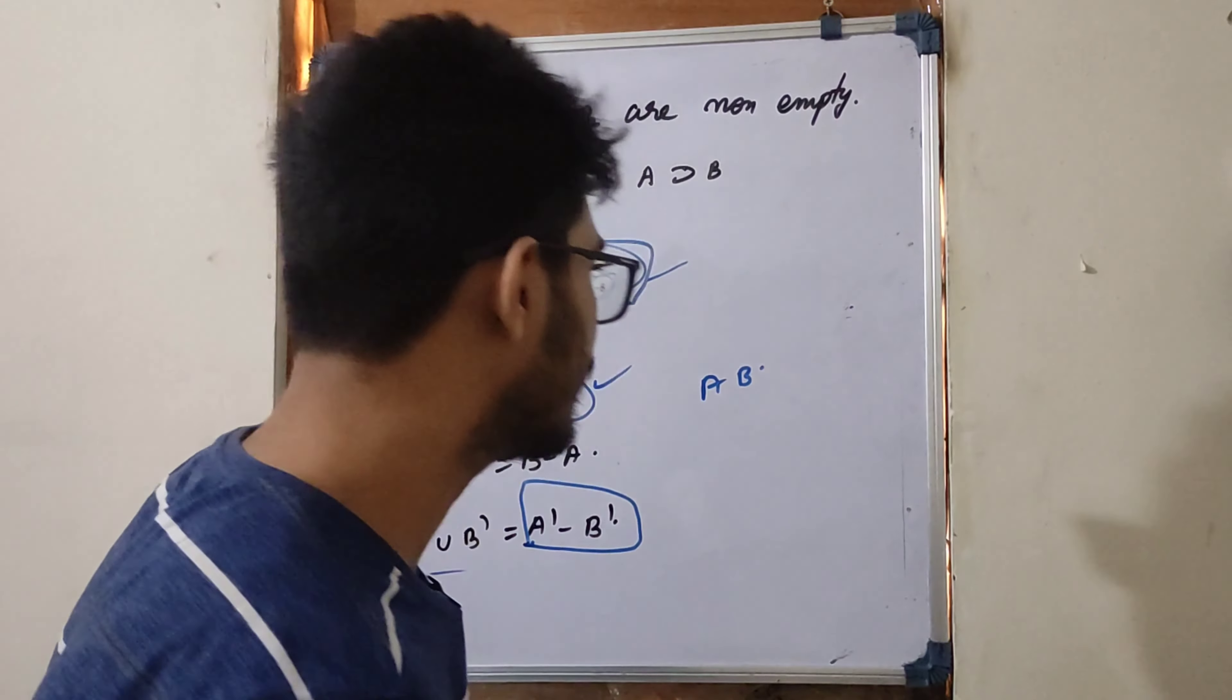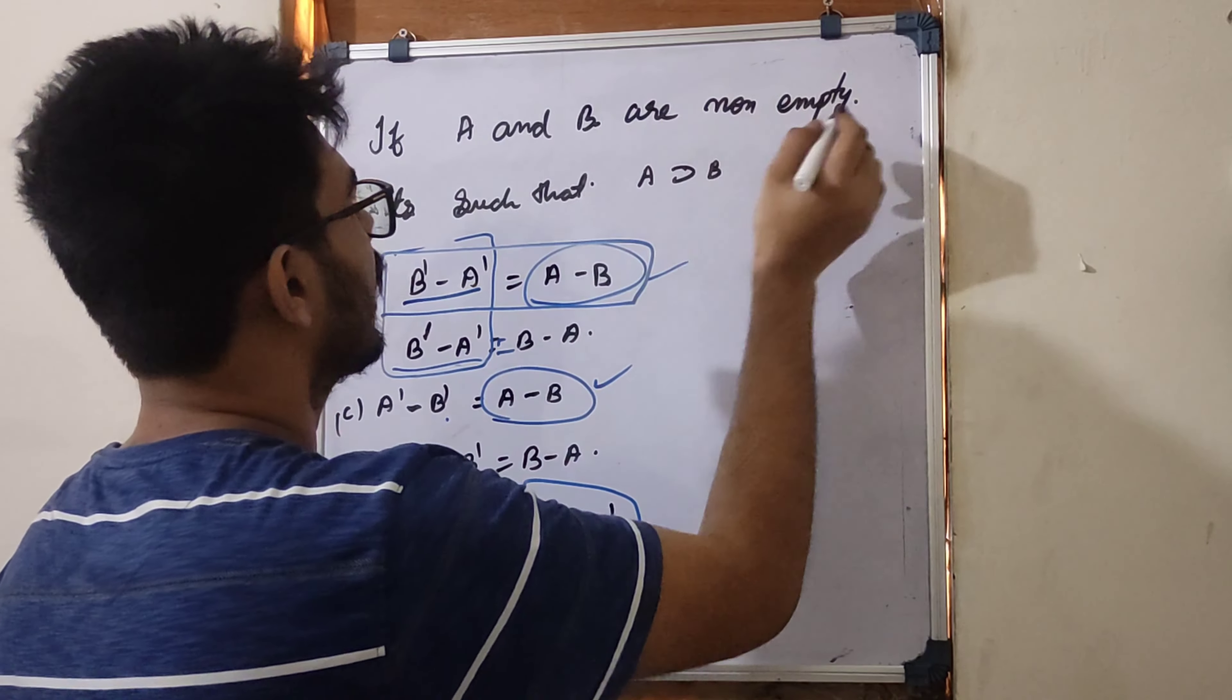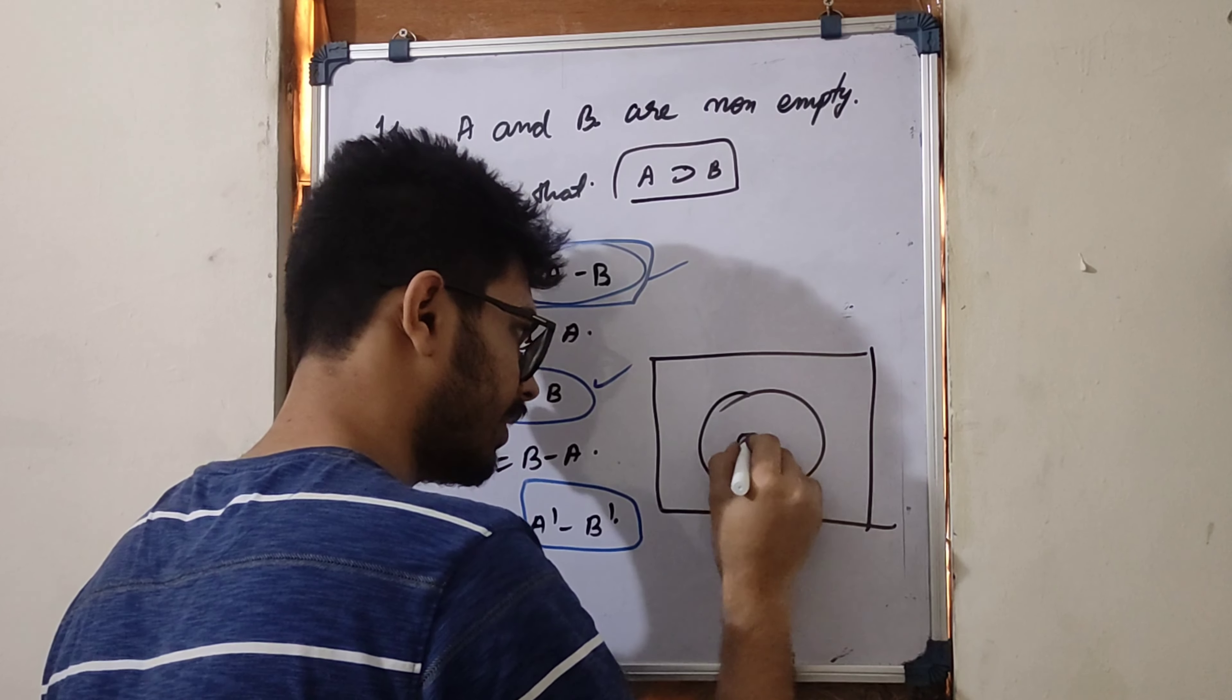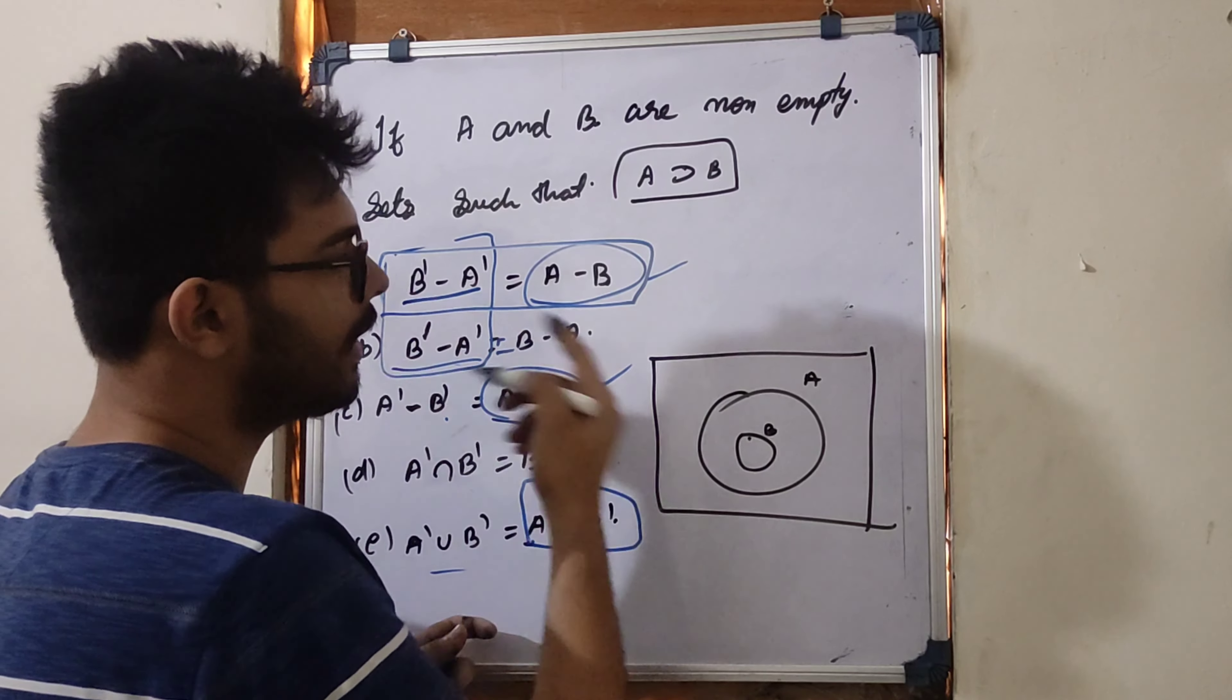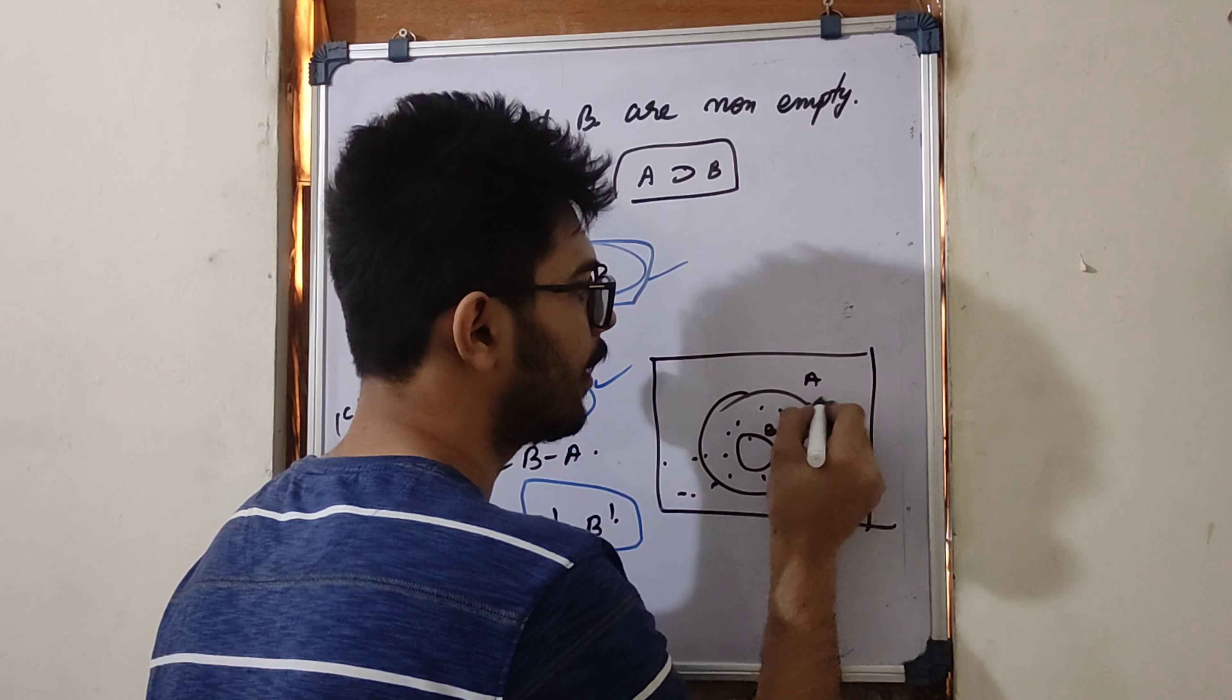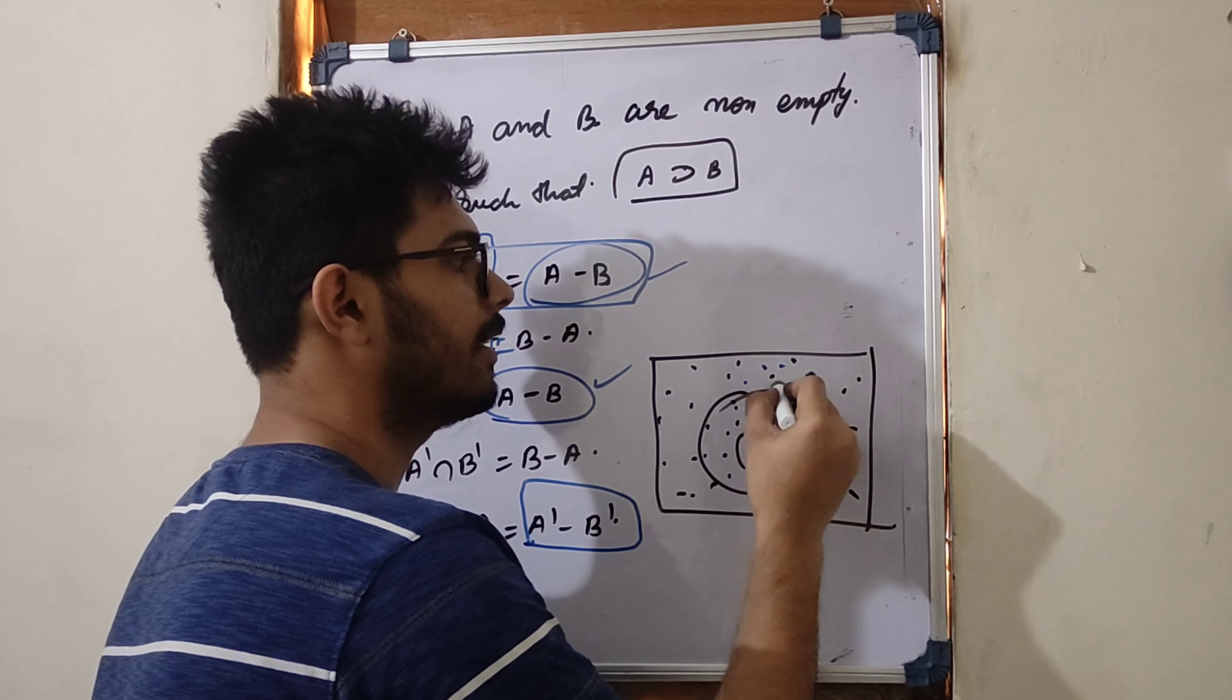If you have a form of A minus B, then we have A minus B. If we have a form of A minus B, then we have A minus B.